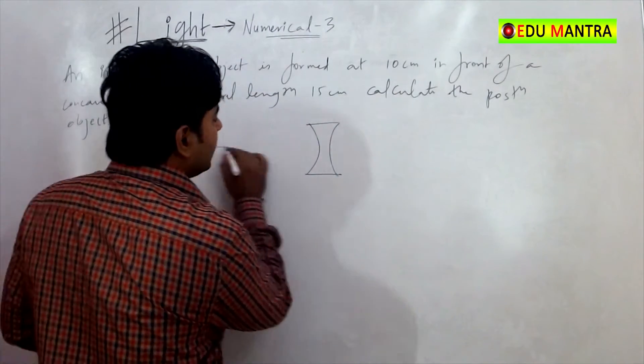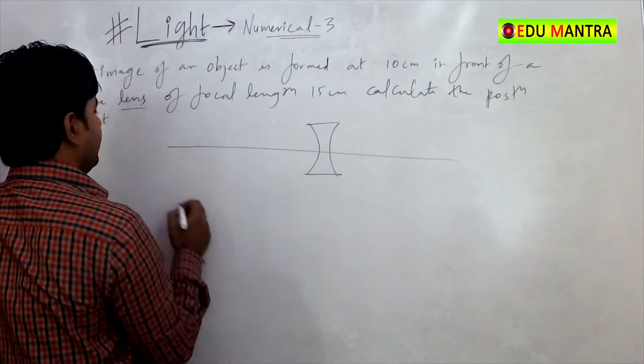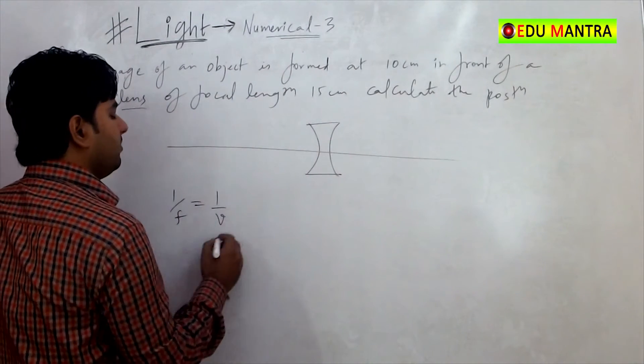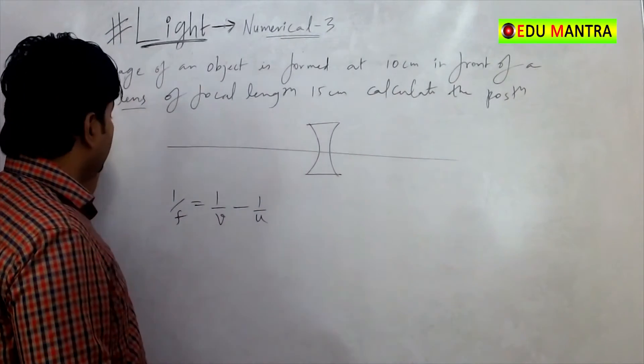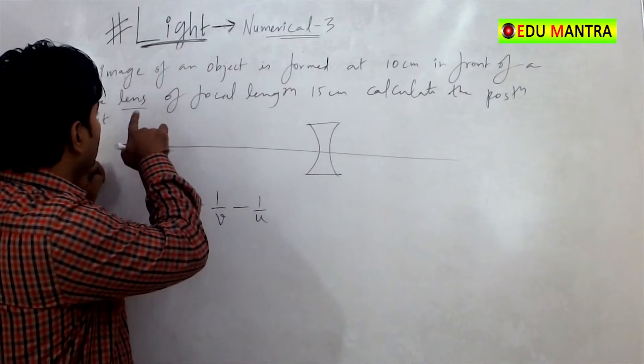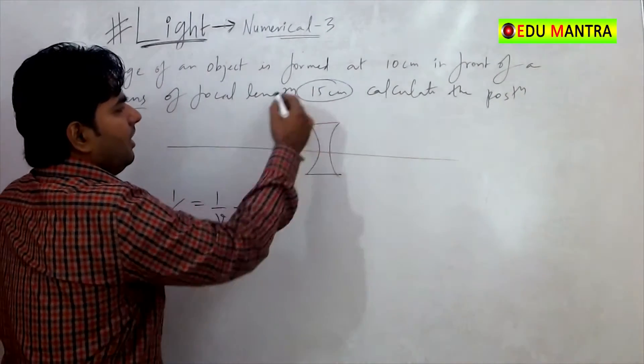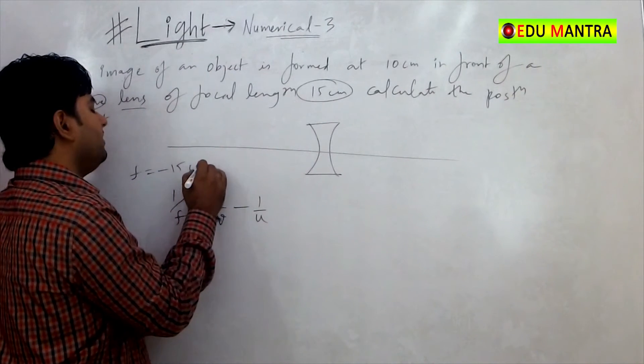For concave lens, we have a lens right here. The lens formula is 1 by F is equal to 1 by V minus 1 by U. So we have a concave lens. For concave lens, F is negative. So we have F is equal to minus 15 cm.